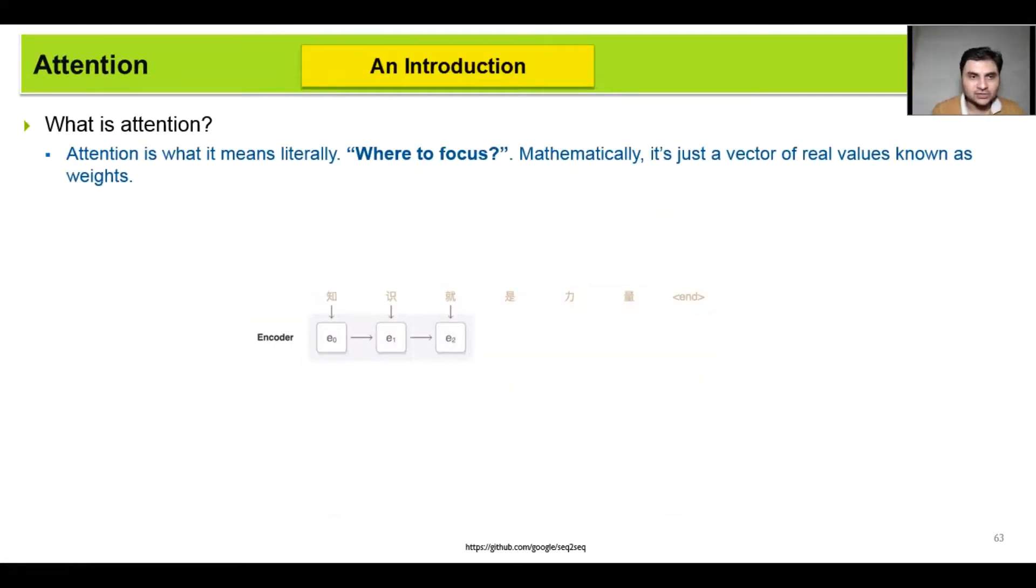Now what is attention? Attention is what it means literally: where to focus. Mathematically, it's just a vector of real values. We have a vector containing real values where each value denotes the amount of attention to be paid on that index.